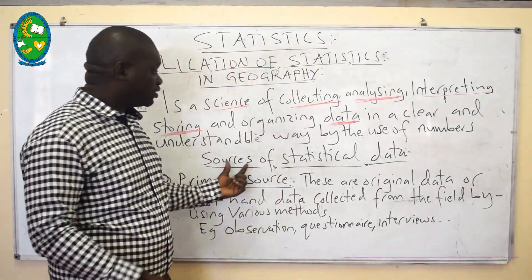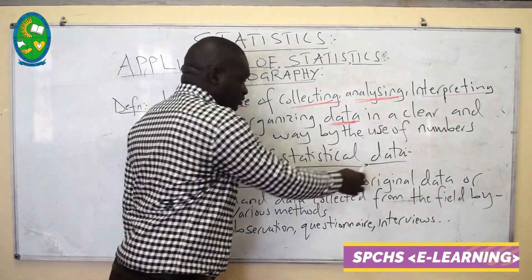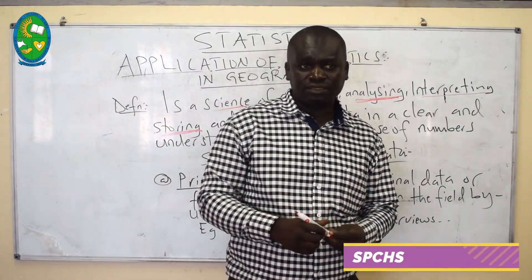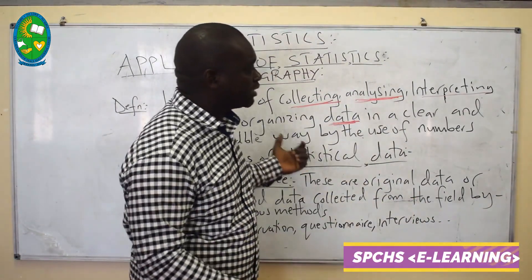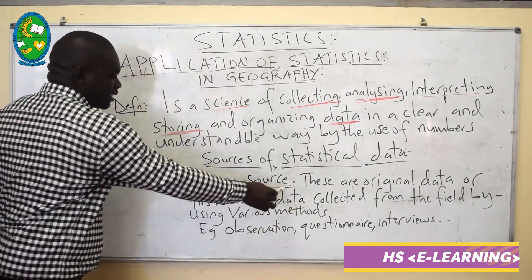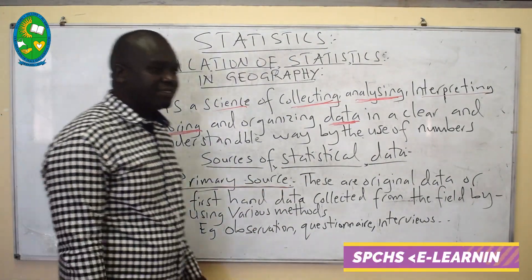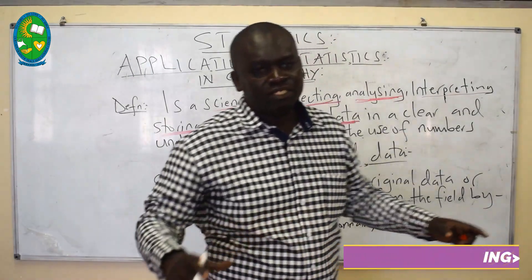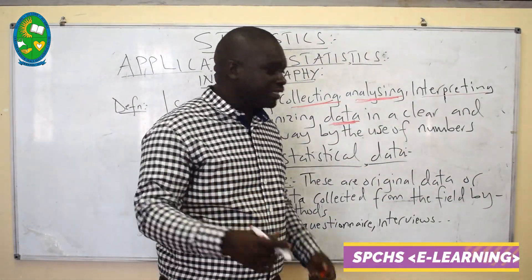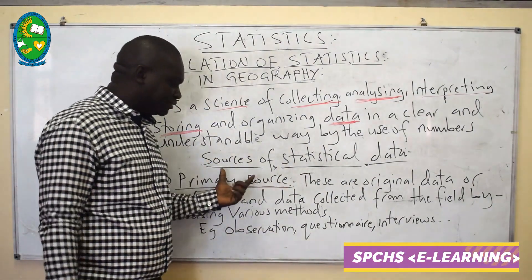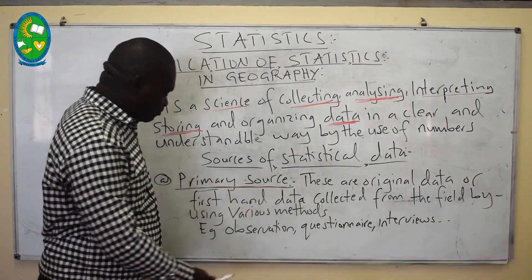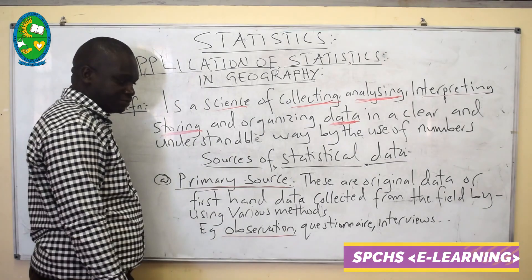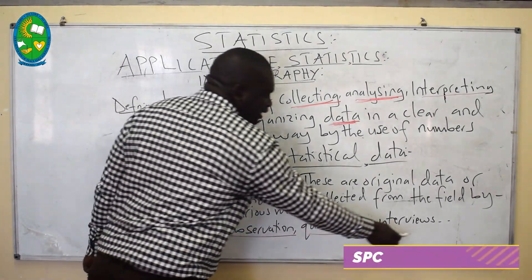If we look at the sources of statistical data — normally we have two sources. The first one is primary data, or primary source. When we talk about the primary source, these are the original data, or we can say these are the first-hand data which have never been collected by another person except you. There are different ways of collecting this primary data — you can collect it by using various methods like observation, questionnaire, or interview.